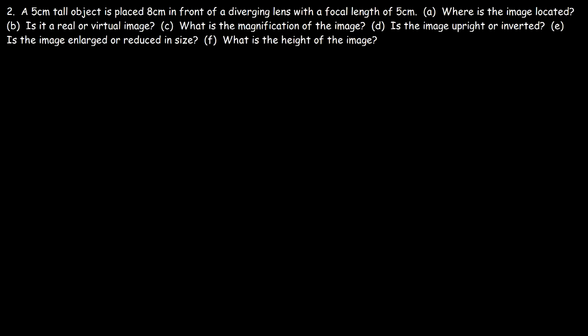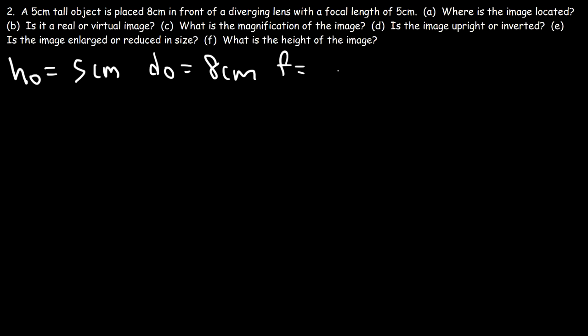Problem 2: A 5 centimeter tall object is placed 8 centimeters in front of a diverging lens with a focal length of 5 centimeters. Where is the image located? The height of the object is 5 centimeters, DO is 8 centimeters, and the focal length is 5 centimeters. Since we're dealing with a diverging lens, we use negative 5 centimeters for the focal length.